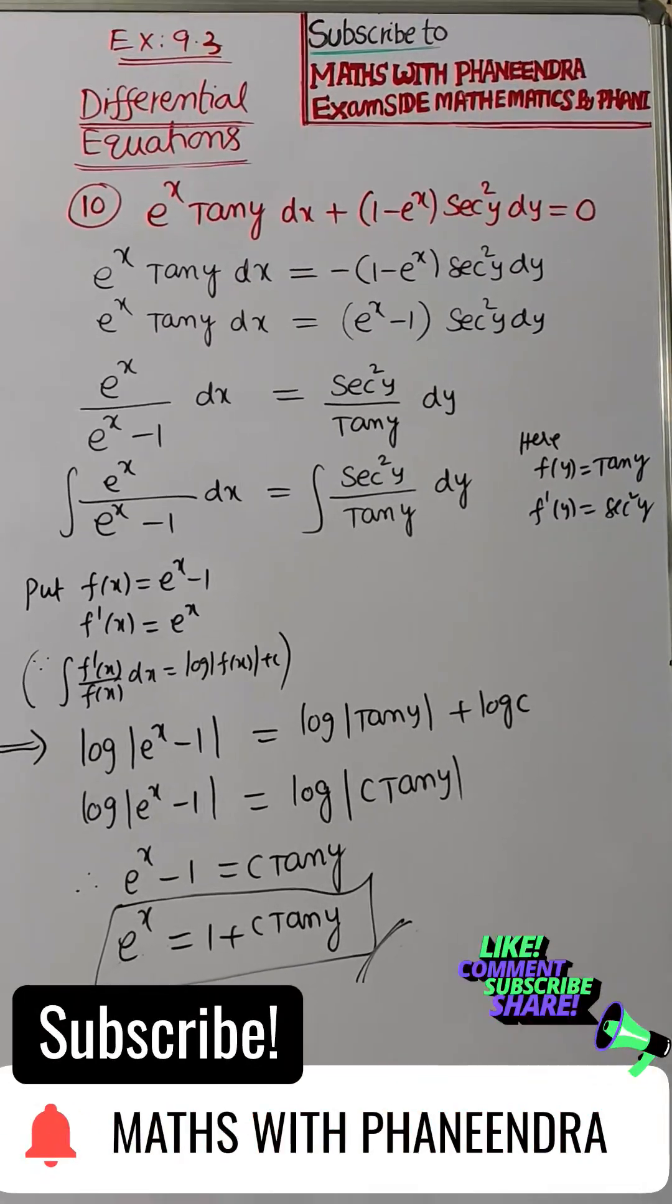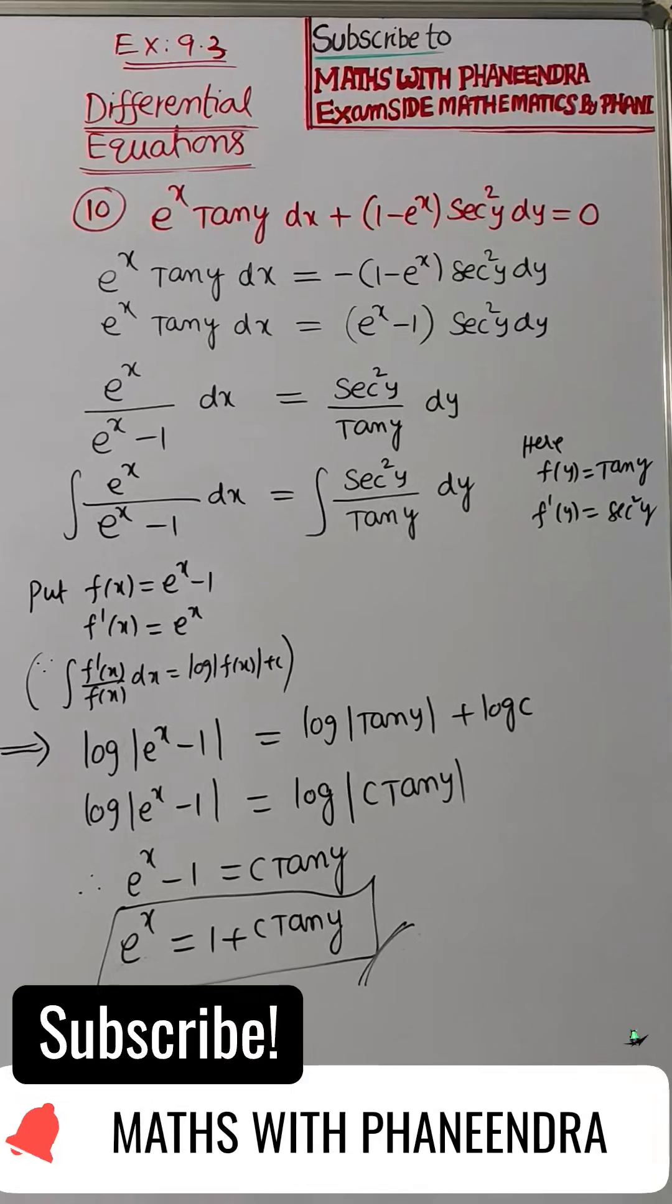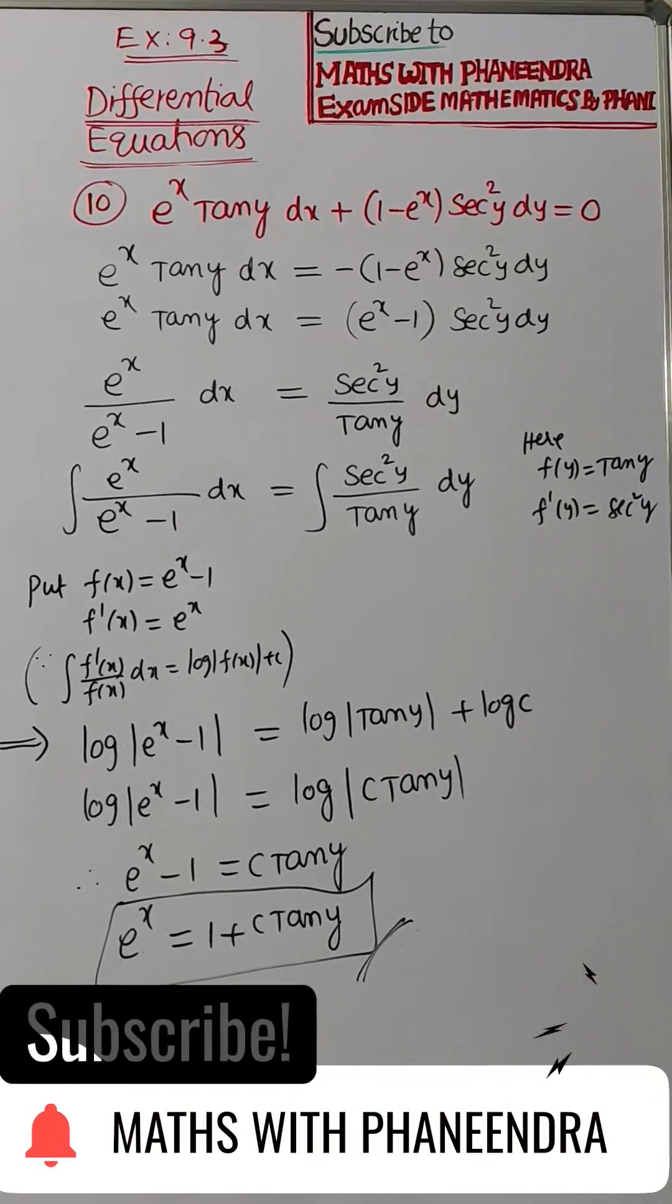So minus 1 bring the other side, e power x equal to 1 plus c tan y. I hope you understand students.